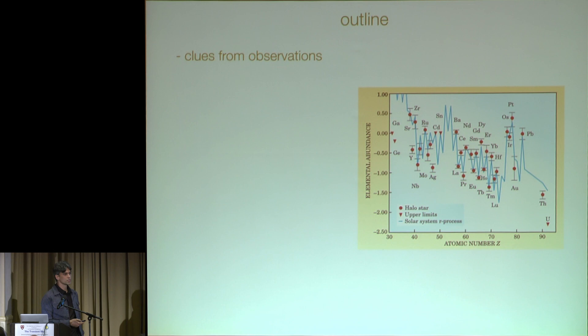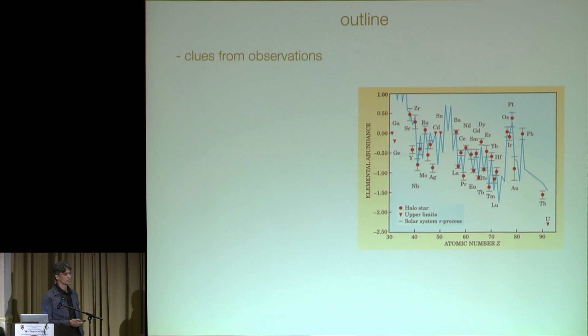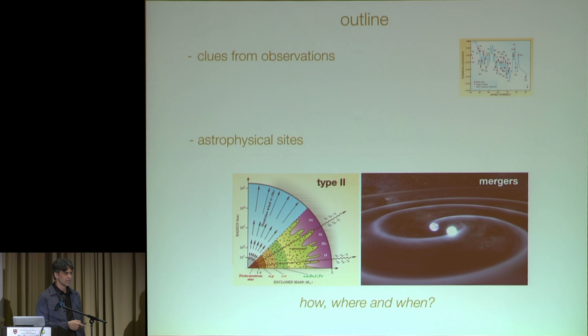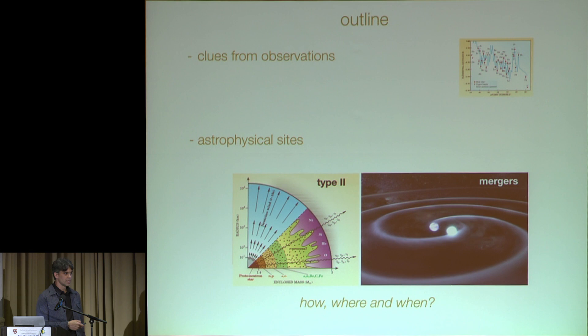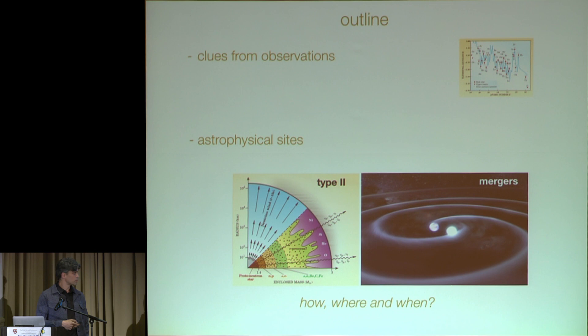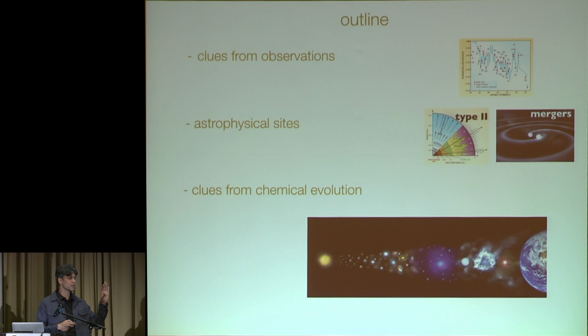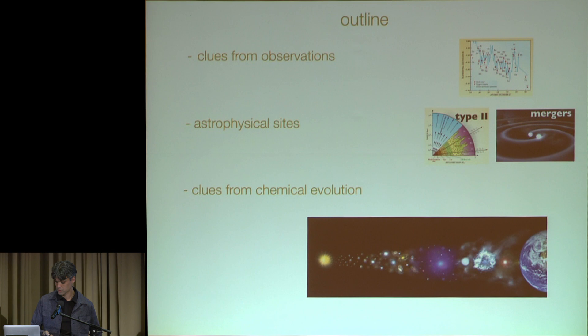Let me give you an outline of the talk. I'm going to tell you about what we know about observations of the R-process in a wide range of scenarios. Then I'll discuss in detail these two astrophysical sites proposed for almost 30 years: Type II supernovae and mergers. I'll focus on three aspects: how is the R-process made, where is it deposited within a galaxy, and when in the history of the universe — which involves the time delay in mergers that is very important. Then I'll talk about clues of chemical evolution and our first efforts to put everything together in a consistent model of the formation of the Milky Way, to replicate the fossil record we see in halo stars and the abundance patterns in those stars.